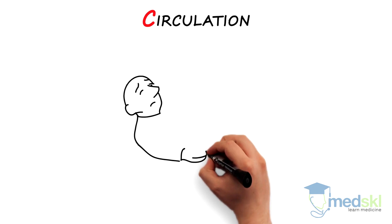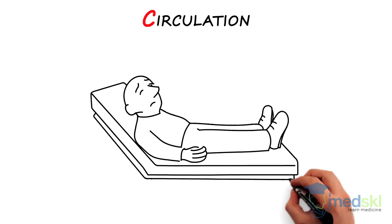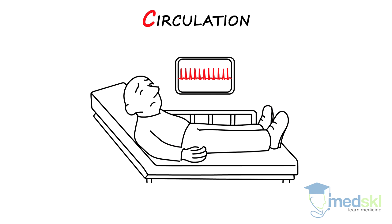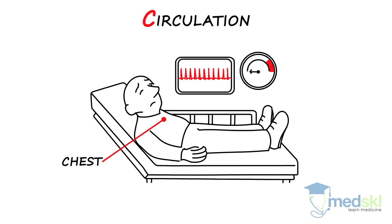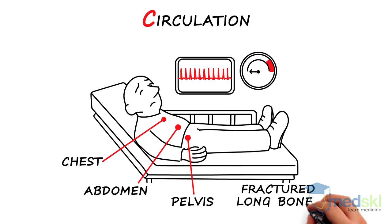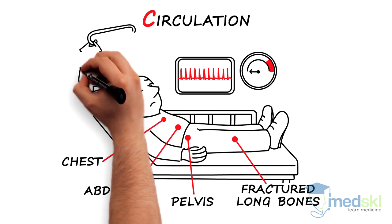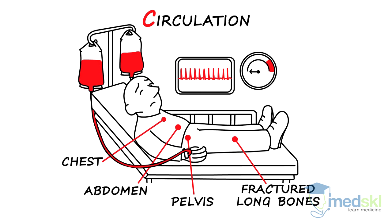C — circulation. If the patient has a fast heart rate or low blood pressure, suspect ongoing hemorrhage or blood loss, the number one cause of preventable death in trauma. Bleeding is likely in one of four locations: chest, abdomen, pelvis, or fractured long bones. Start IV fluids or blood transfusion through two big intravenous lines.